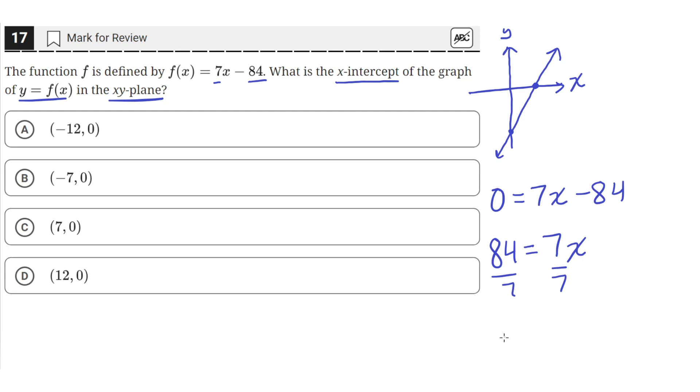And we'll see that the value of x is equal to 84 over 7, which, if you put in your calculator or if you know your tables, is just 12.